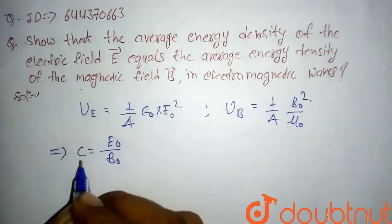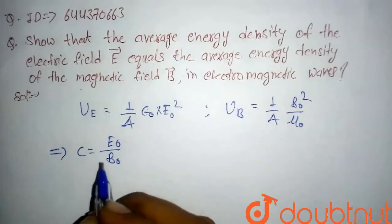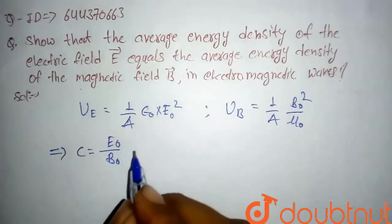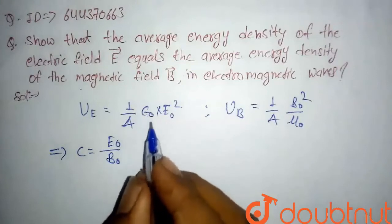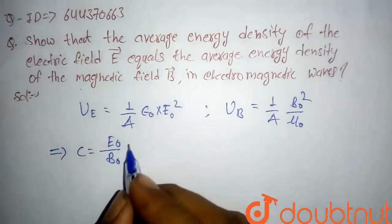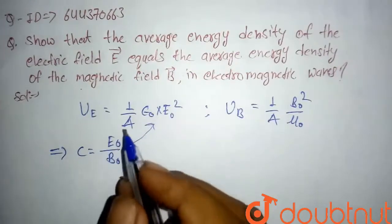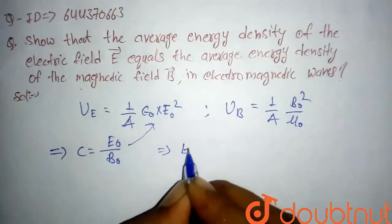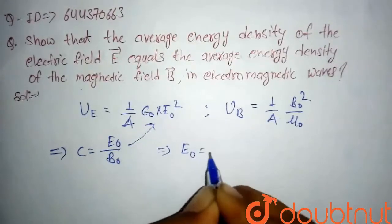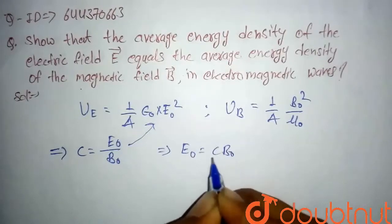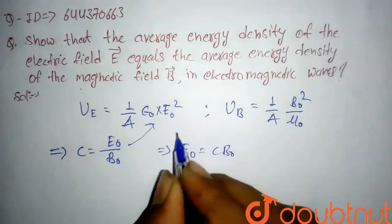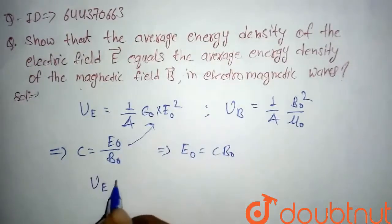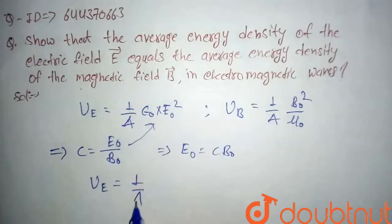We also know that in an electromagnetic wave, the ratio of E₀ to B₀ is given by c, where c is the velocity of electromagnetic waves. So if we put this value into the equation for U_E, the value of E₀ will be c times B₀.